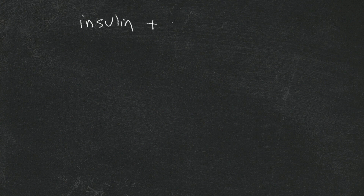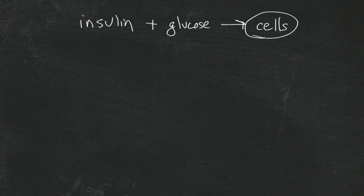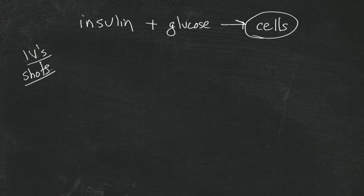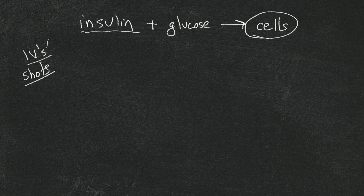Let's look at that one more time. Insulin plus glucose goes into the cells. You might ask, when I was in the hospital I got IVs and then they told me I'd have to take shots — why not just take a pill for the insulin? Well, the bottom line is that insulin is a hormone, and if you swallow it, it gets digested like any kind of protein, like it's a meat. So the only way to administer insulin once you have type 1 diabetes is by either an IV or by injections.